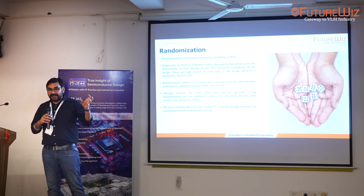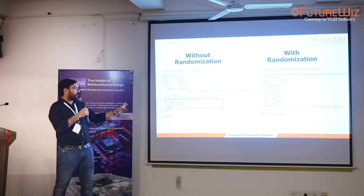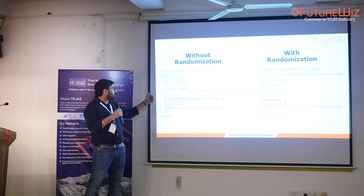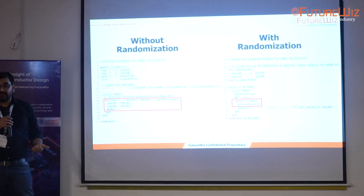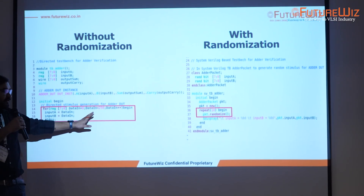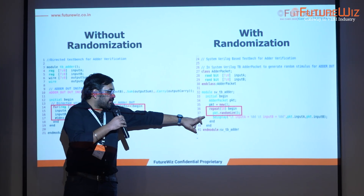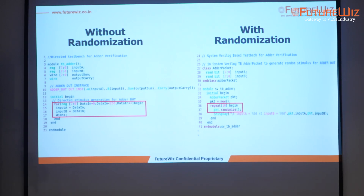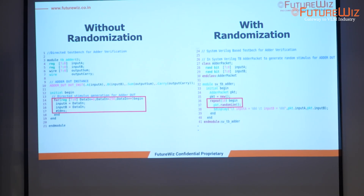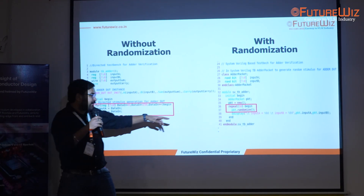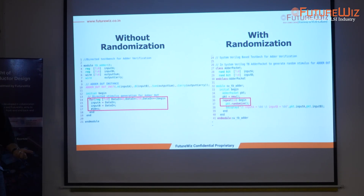Any value can be provided to the design and verified. Without randomization, you need to write extensive code covering every value. With randomization, using the `rand` declaration and `packet.randomize()`, values are automatically picked randomly — you don't have to worry about specifying A=0, B=0, etc. Everything is taken care of automatically. If you want to cover all scenarios without randomization, the number of code lines increases greatly, but with randomization it can be done in one or two straightforward lines.